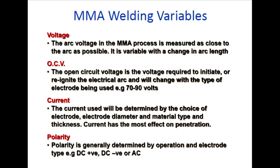The main variable in MMA welding is voltage. Arc voltage in MMA process is measured as close to the arc as possible. Arc voltage depends on arc length - if arc length varies (high or low), voltage will correspondingly be high or low. OCV (open circuit voltage) is the voltage required to initiate or re-ignite the electric arc.